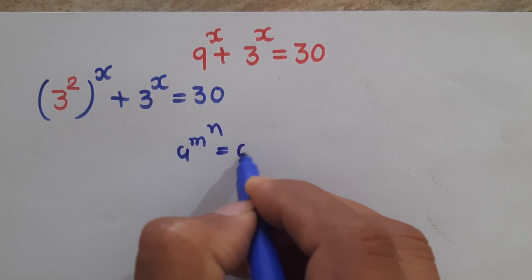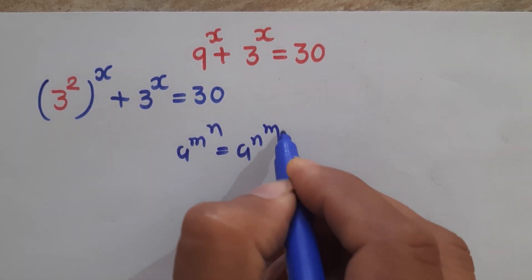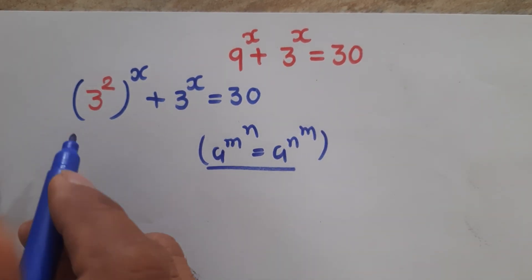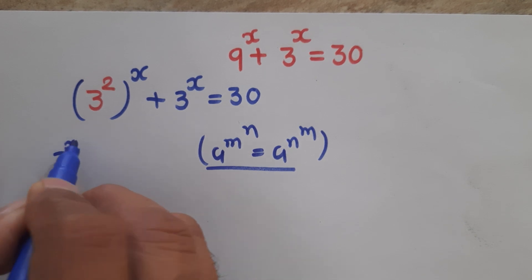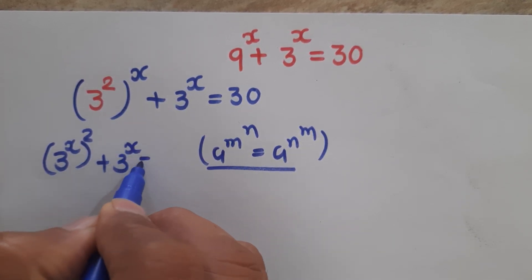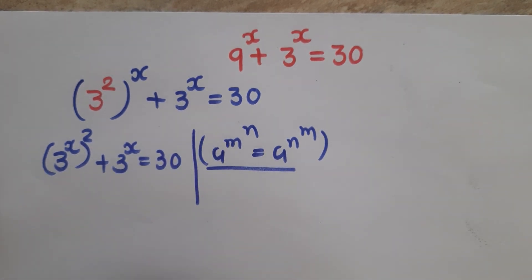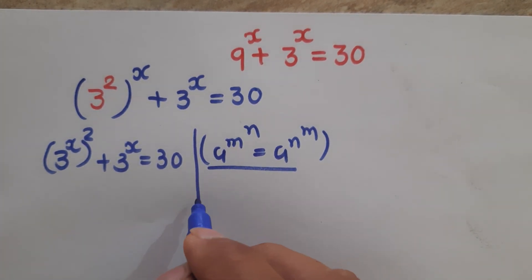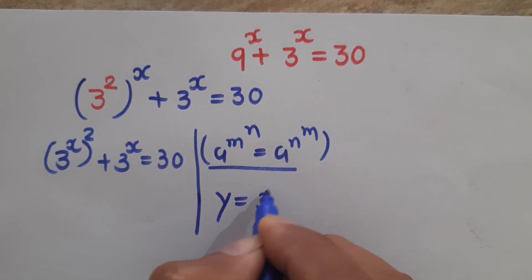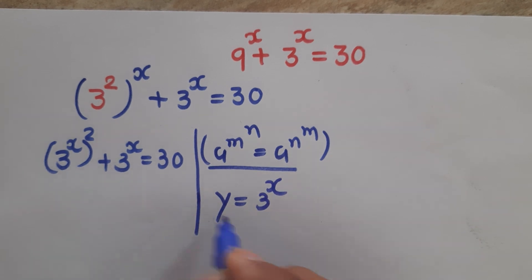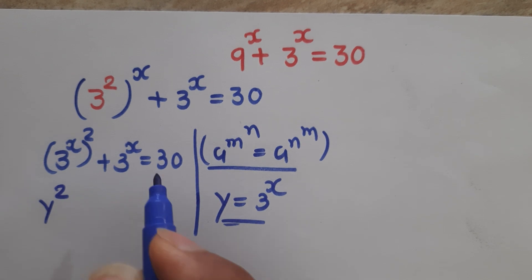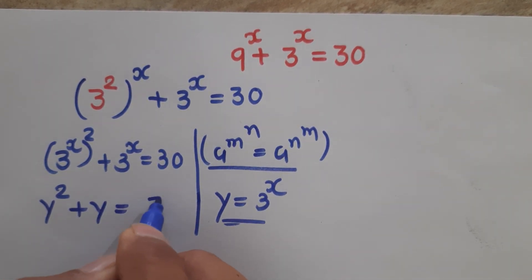Here we will apply one rule: when we have a^m raised to the power n, we can write it as a^n raised to the power m. Applying this rule, we get 3 to the power x, squared, plus 3 to the power x, is equal to 30. Now we will take a substitution — let 3 to the power x equal y.